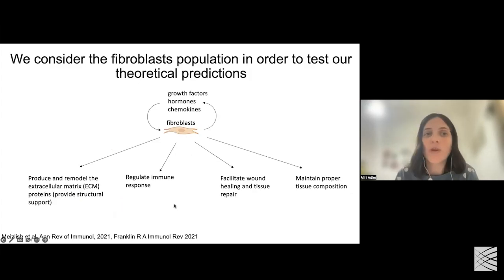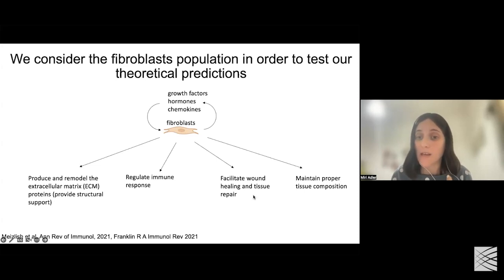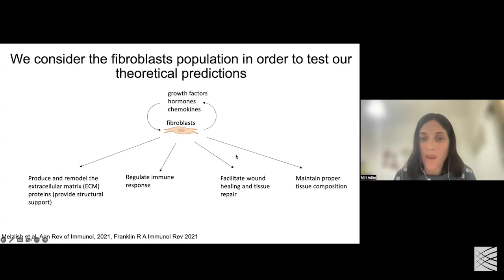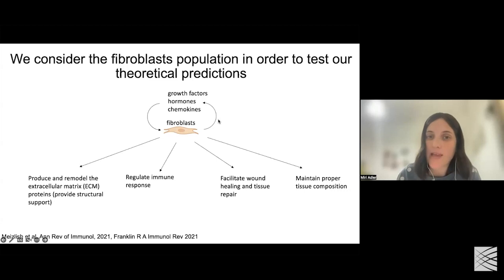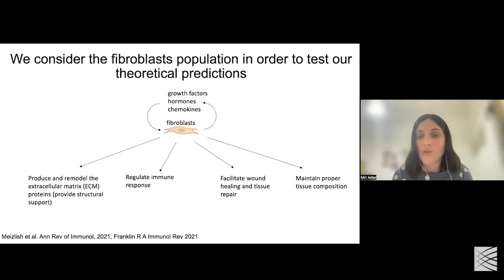Using this theoretical framework, we potentially have a way — when looking at real data — to infer from patterns what is the underlying mechanism governing how cells divide labor. To test this on real data, we considered fibroblast populations. These cells are found in most mammalian tissues and are known to be multitaskers — they produce and remodel the extracellular matrix, provide structural support, regulate the immune response, facilitate wound healing and tissue repair, and maintain homeostasis. Fibroblasts can also produce many types of signals including growth factors, hormones, and chemokines, making them great candidates to test whether they use interactions within the fibroblast population to take on different specializations.